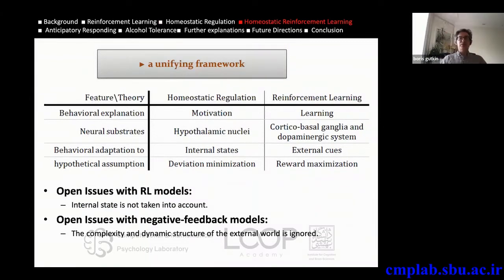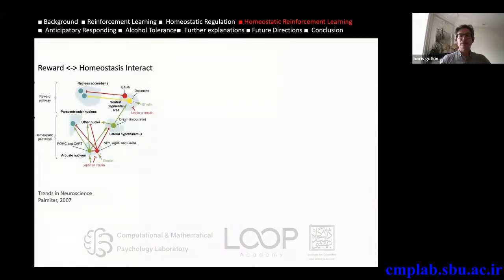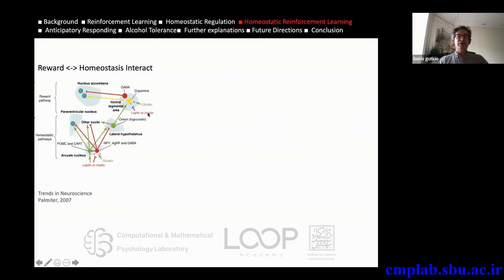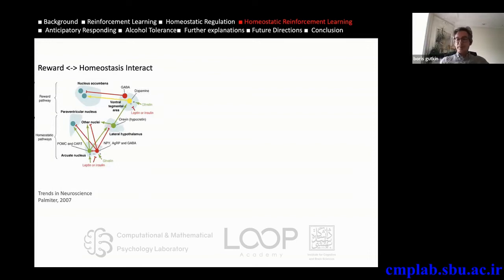What we set out to do is to provide a unifying framework, and it turned out not to be so mysterious to do so. The lateral hypothalamic nuclei that gather information about internal states provide direct input to the dopaminergic system — for example, in the ventral tegmental area. There are also other variables through various hormones that provide homeostatic or internal state inputs to the dopaminergic system. We really have a biological substrate to be able to define our theory. Let me give you, in a few steps, how you can define this theory.